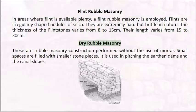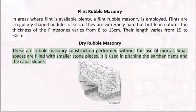Polygonal Rubble Masonry: stones are roughly shaped into irregular polygons and arranged so as to avoid vertical joints in the face work, breaking joints as much as possible, with use of stone chips to support the stones. Flint Rubble Masonry: in areas where flint is available, flint rubble masonry is employed. Flints are irregularly shaped nodules of silica — extremely hard but brittle in nature. The thickness of flint stones varies from 8 to 15 cm, and their length varies from 15 to 30 cm. Dry Rubble Masonry: rubble masonry constructed without the use of mortar; small spaces are filled with smaller stone pieces. It is used in pitching earthen dams and canal slopes.